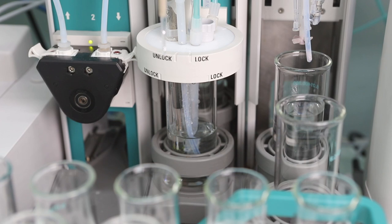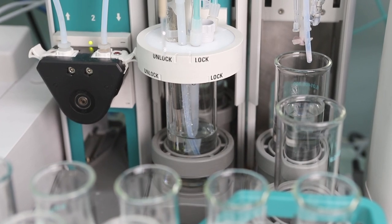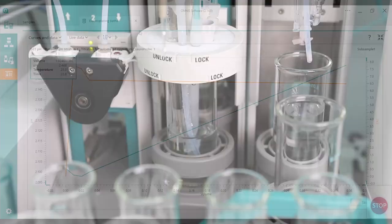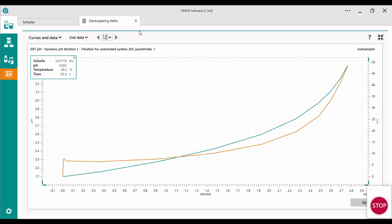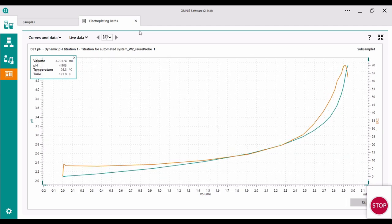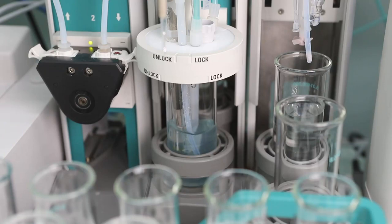After the sample was pipetted the beaker is filled with water and the titration starts. Here we perform a sulfuric acid analysis with a digital unitrode and a 0.1 molar sodium hydroxide solution as the titrant.